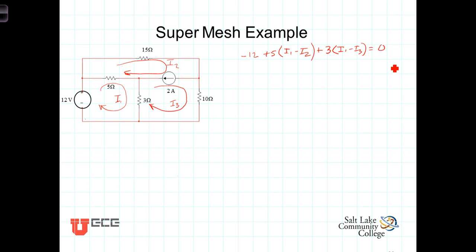Now the super mesh, starting here at this point, going up and around the 15 ohm or across the 15 ohm resistor, we have the voltage drop there being 15 times I2. Now continuing on down here, not going around this branch here because that's where the current source is.